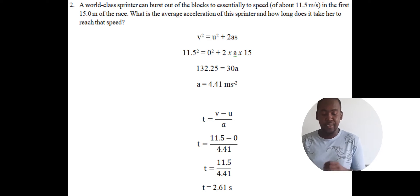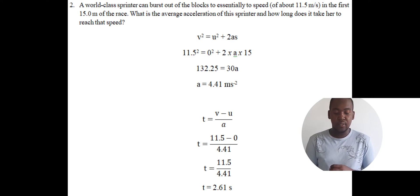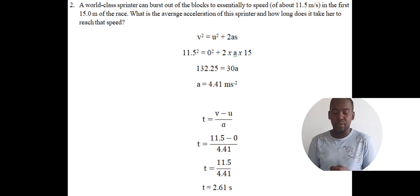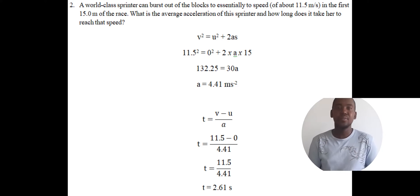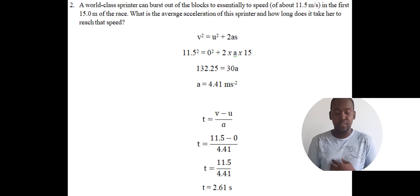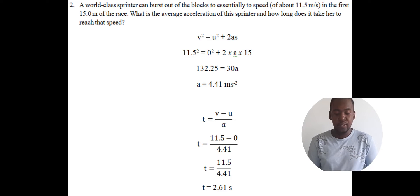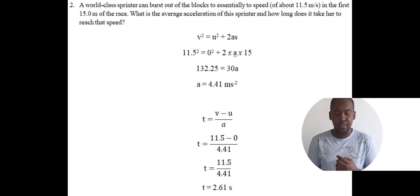Now the second part: how long did she take to get to that distance? We have the acceleration, u, v, and s. We use t equals v minus u over a. So v is 11.5, u is zero because she started from rest, over the acceleration 4.41. So t equals 11.5 over 4.41, giving t equals 2.61 seconds.